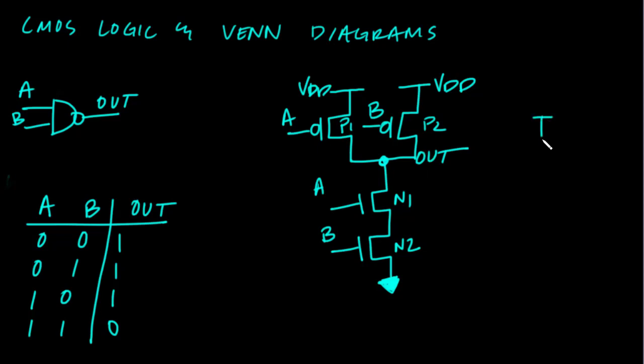And that's the condition, the only condition when the output is low. All other conditions, the output is going to be high because either A or B is low. And with the low on either of those, that will turn on one or the other or both of the PMOS transistors to VDD, and you'll have a high output.